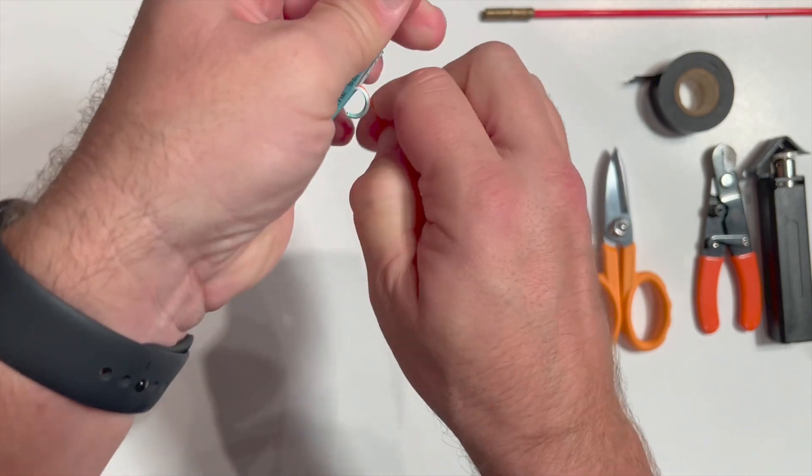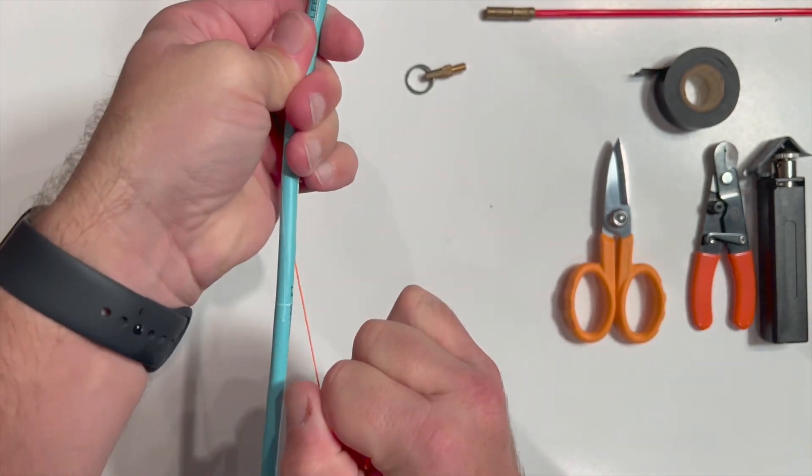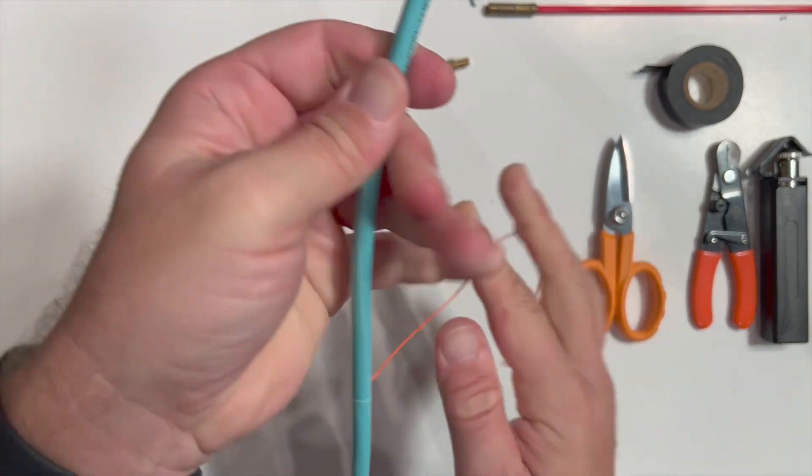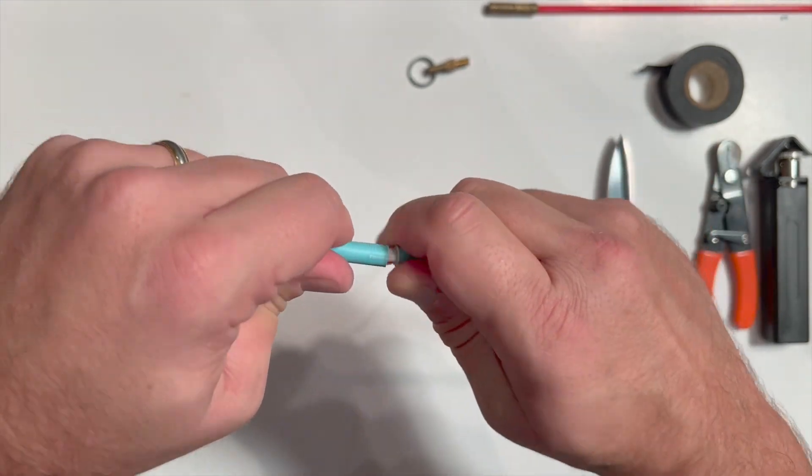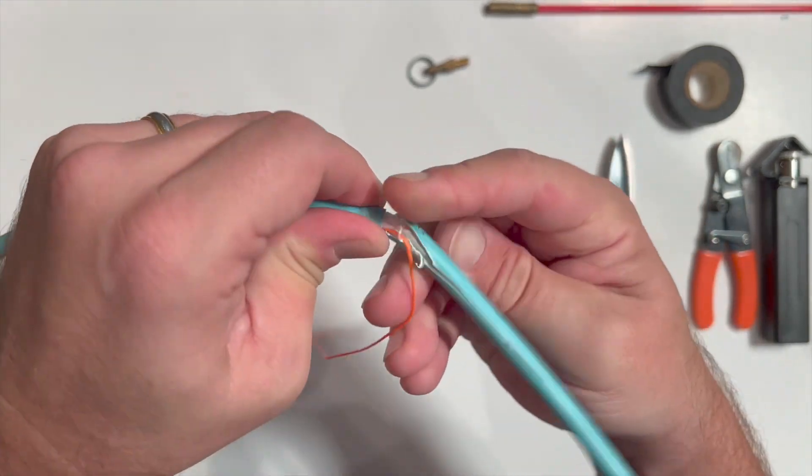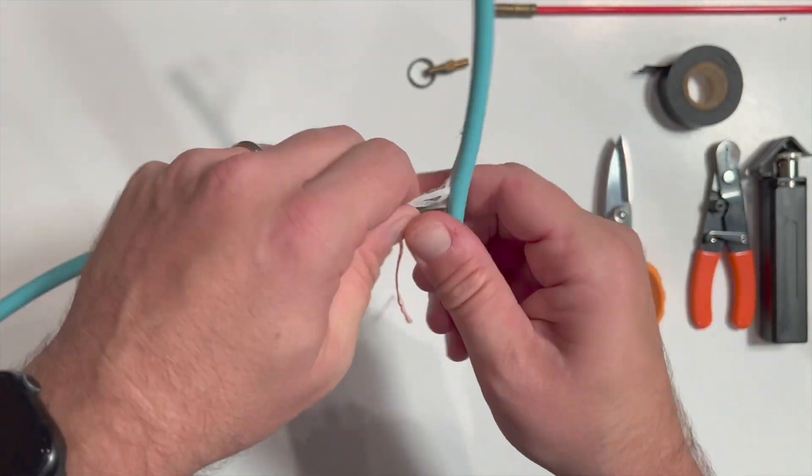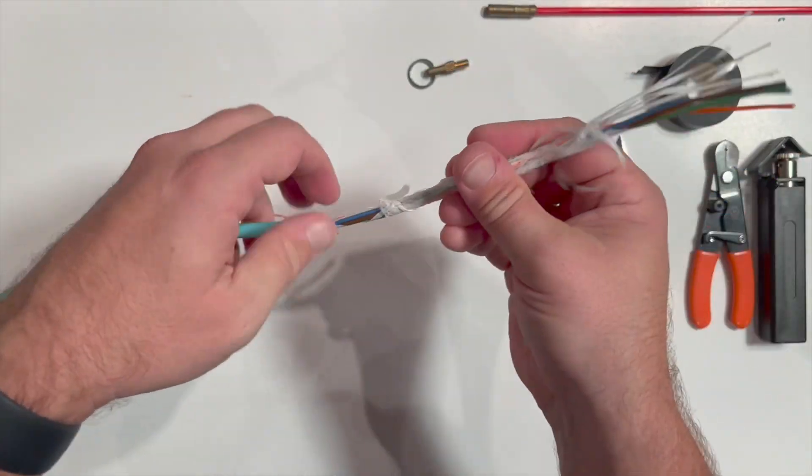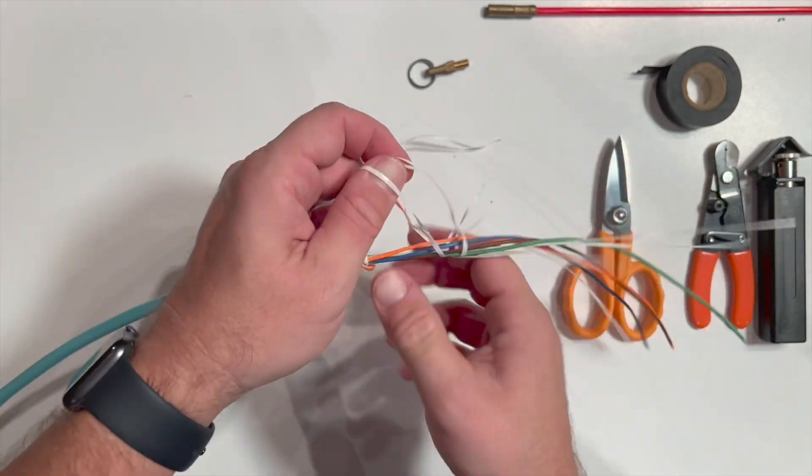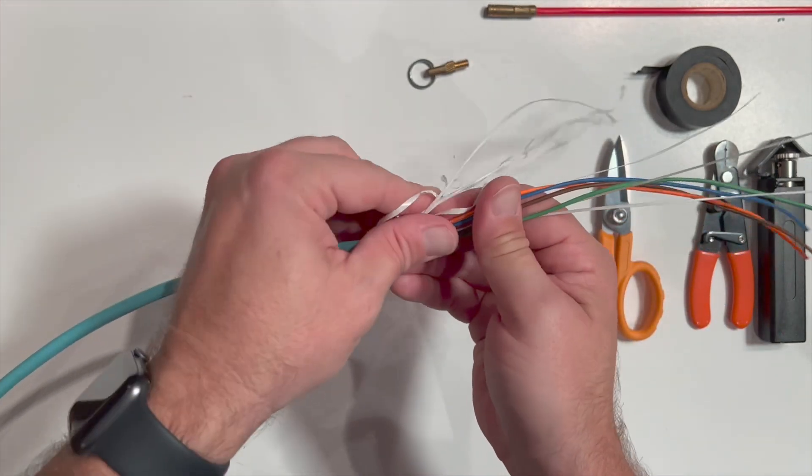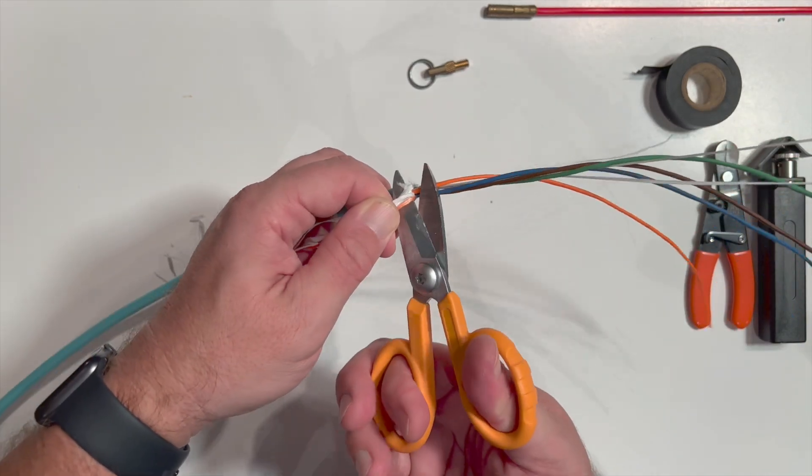Carefully peel back the outer jacket from the two millimeter subunits within it. Once separated, use Kevlar shears to trim the tape wrap, ripcord, and dielectric rod back to the end of the outer jacket.